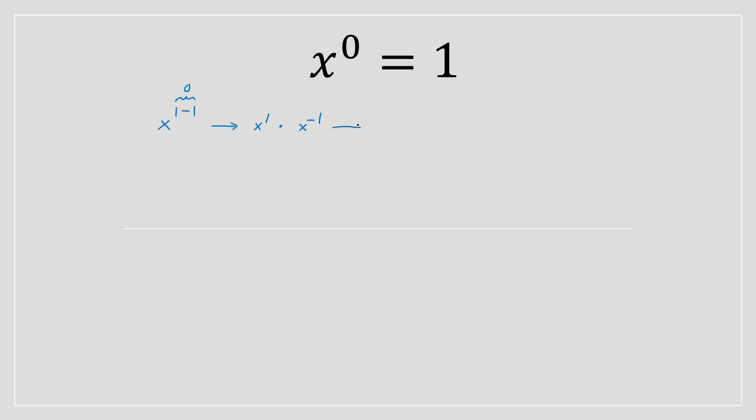So this could be rewritten as x to the power of 1 divided by x to the power of 1 because it moved into the denominator. And this ultimately will be equal to 1.